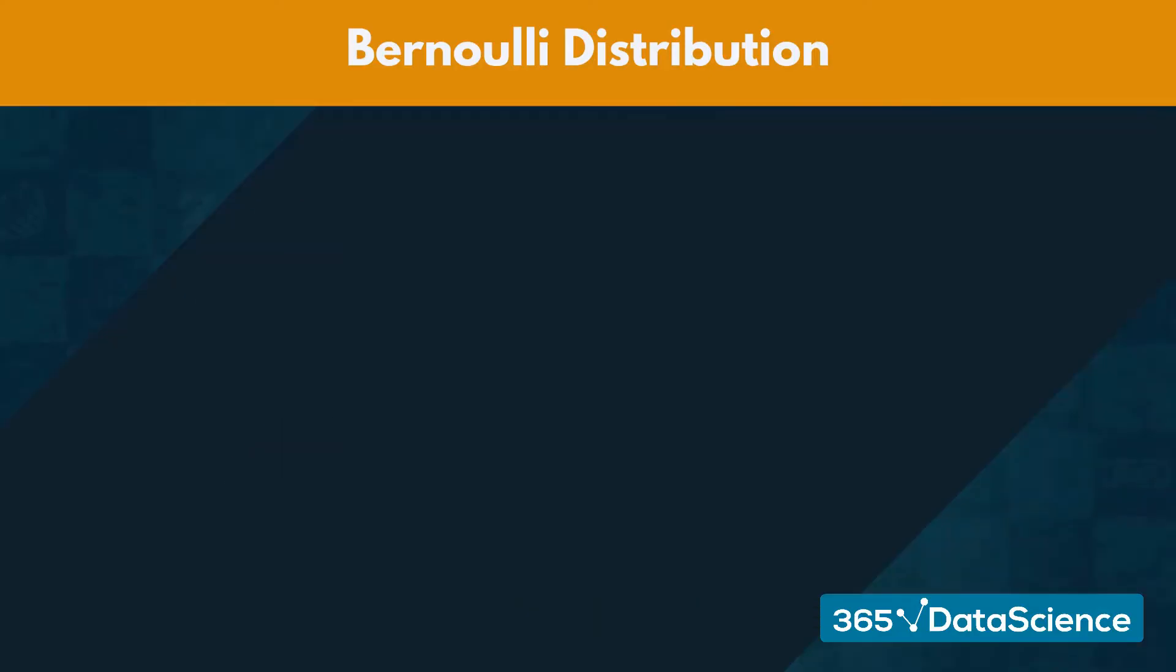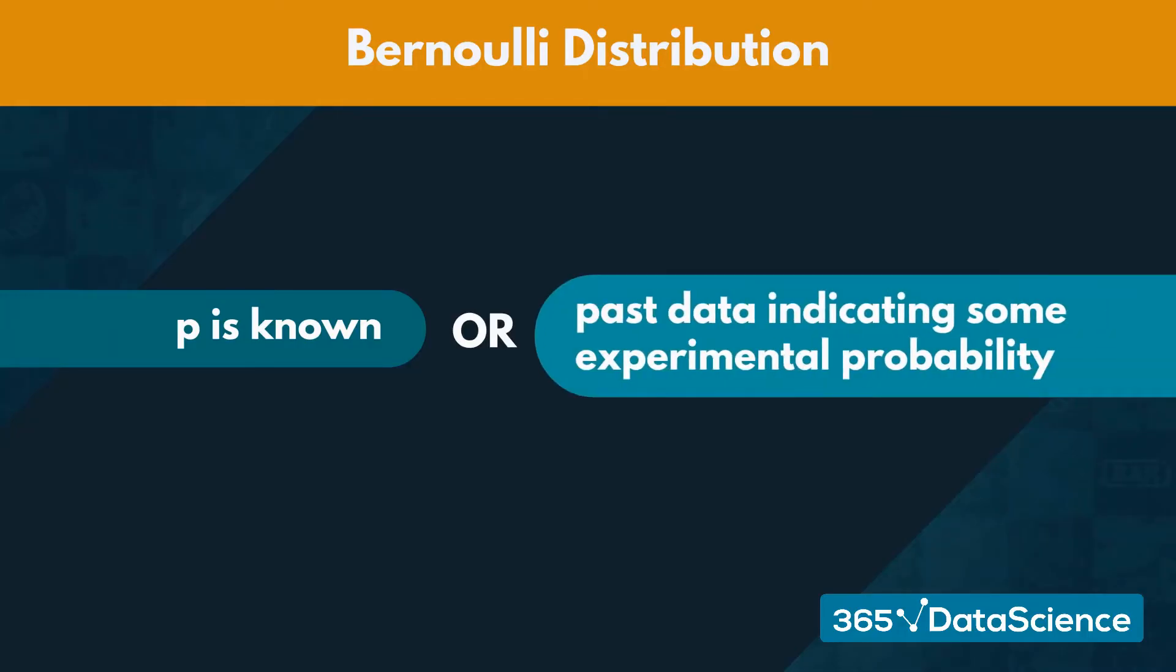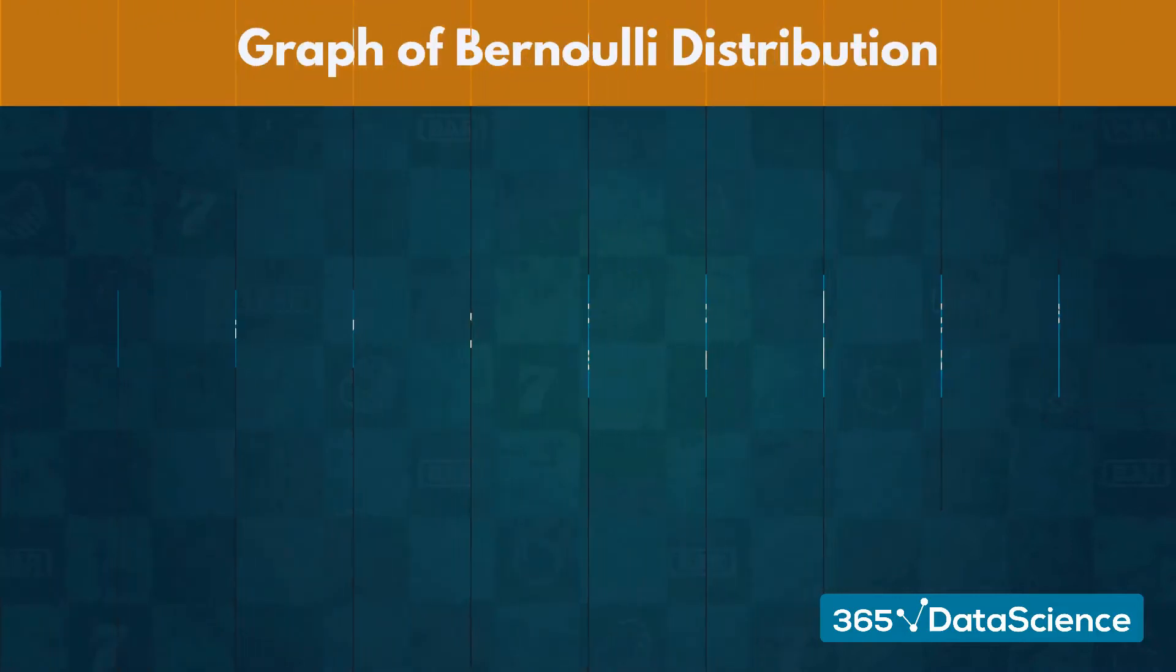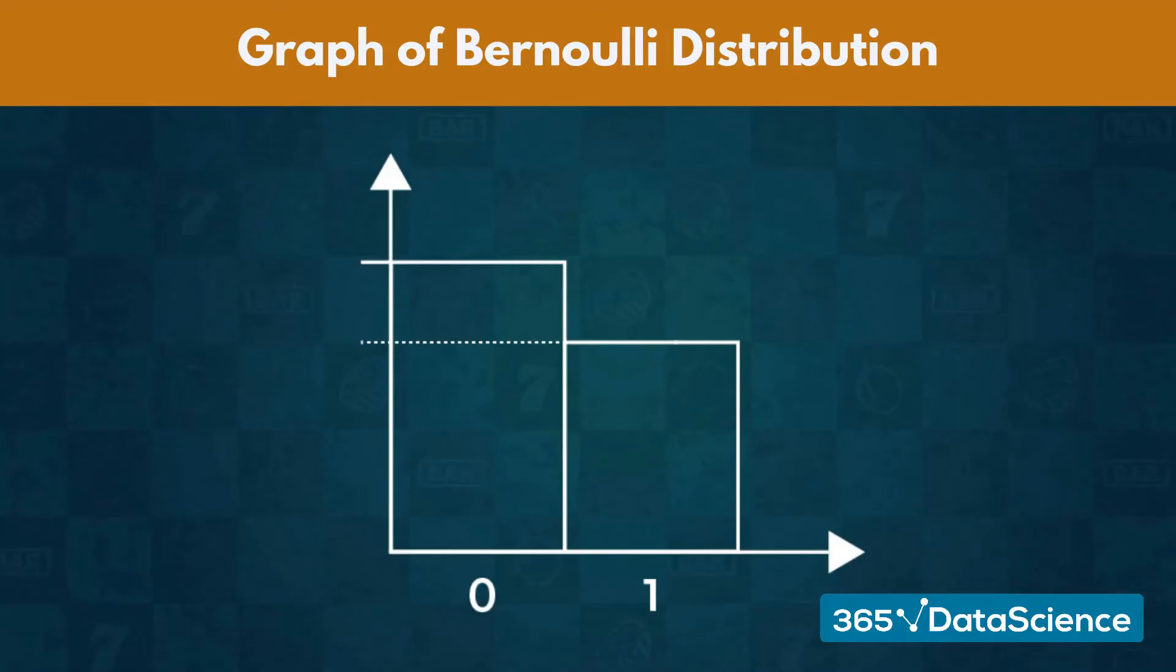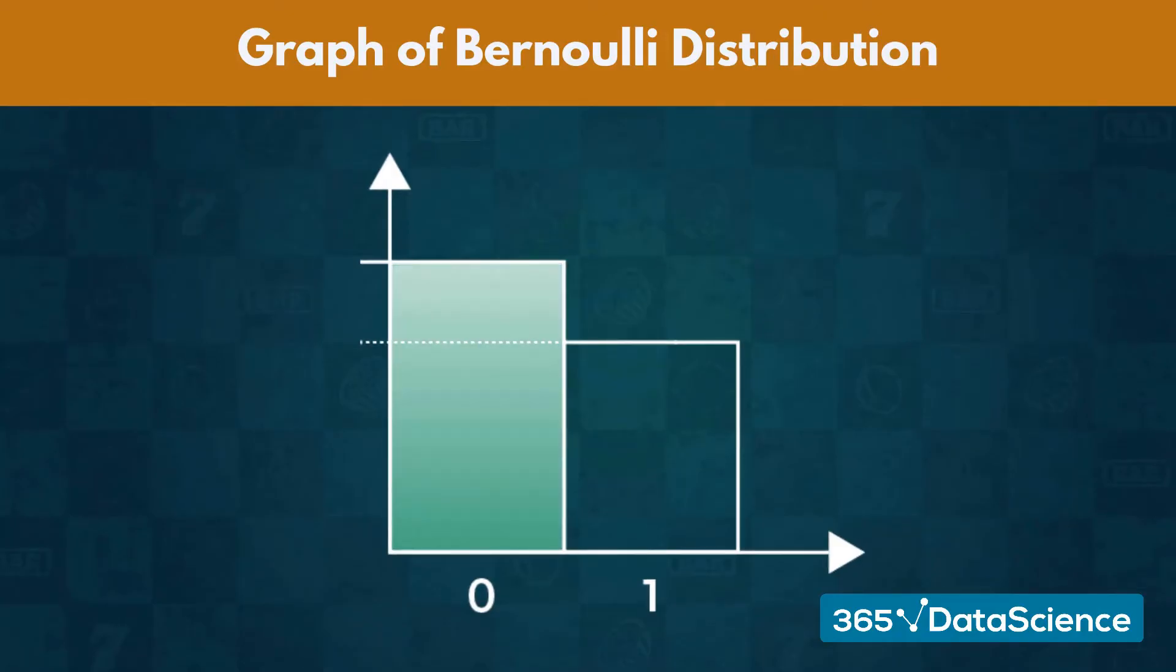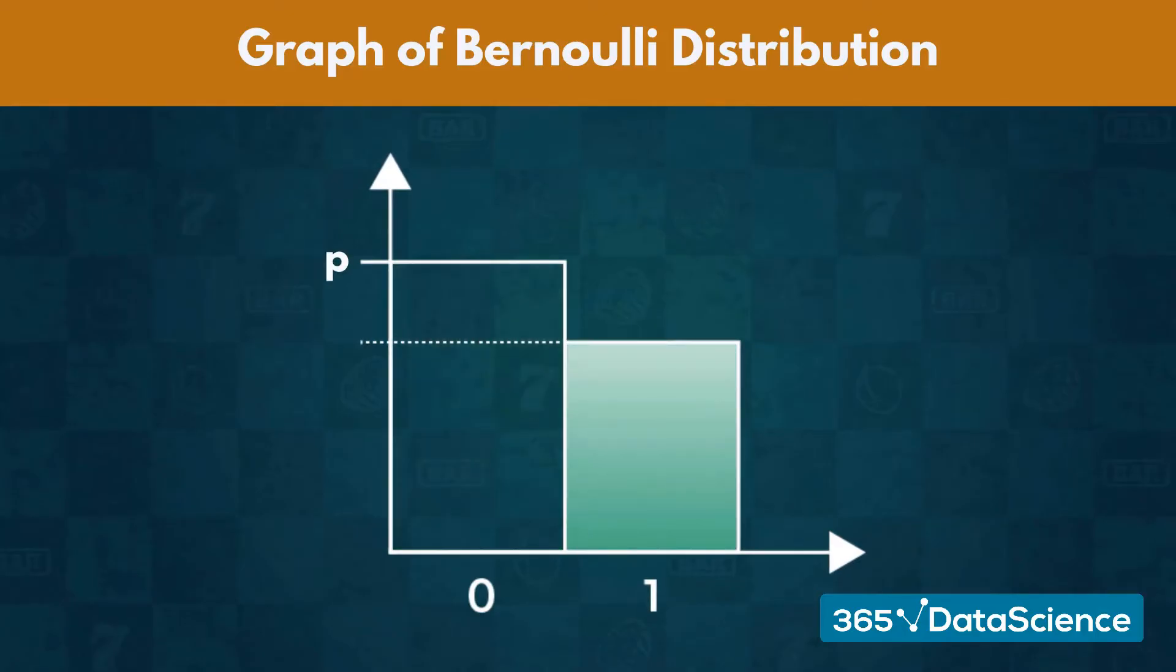Usually when dealing with a Bernoulli distribution, we either have the probabilities of one of the events occurring, or have past data indicating some experimental probability. In either case, the graph of a Bernoulli distribution is simple. It consists of two bars, one for each of the possible outcomes. One bar would rise up to its associated probability of p, and the other one would only reach 1 minus p.